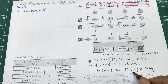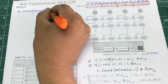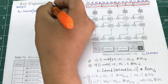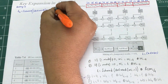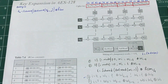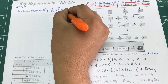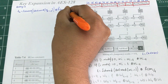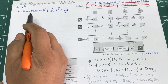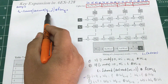What is the value of I? It's 4. So 4 minus 1 is 1, giving W_{i-1} which equals W3. Then XOR with Rcon, where I is 4, so 4 divided by 4 gives 1. We follow the order of operations — whatever is in parentheses, I have to do first.